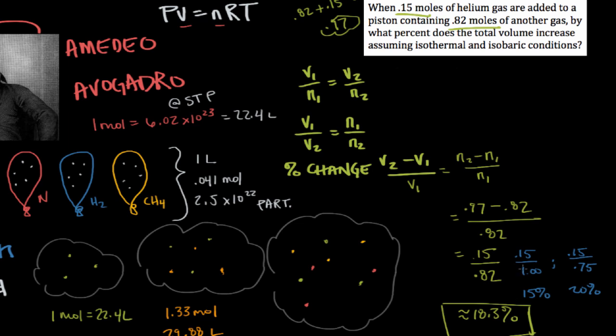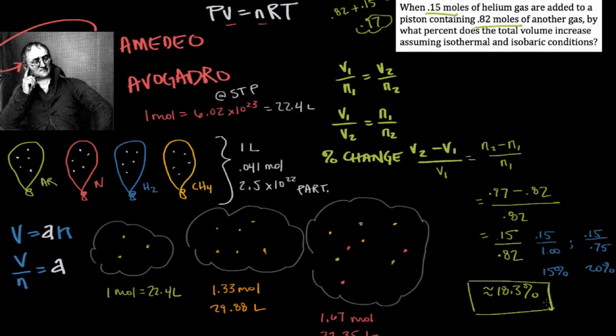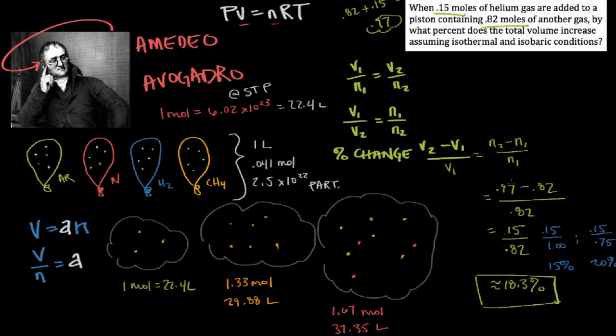So when 0.15 moles of helium gas are added to a piston containing 0.82 moles of another gas, by what percent does the total volume increase? Well, it's just about exactly 18.3 percent. We were able to solve this problem with a little bit of critical thinking based on the principles of Avogadro's law.